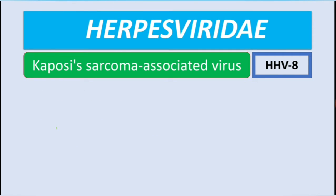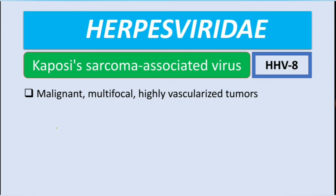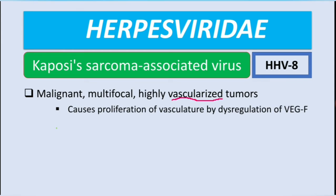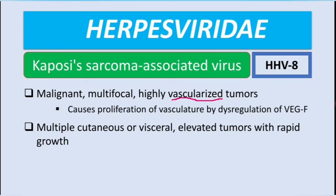Regarding clinical presentation, the Kaposi sarcoma-associated virus causes malignant, multifocal, and highly vascularized tumors. They are highly vascularized because this virus causes proliferation of vasculature by dysregulation of vascular endothelial growth factor (VEGF).